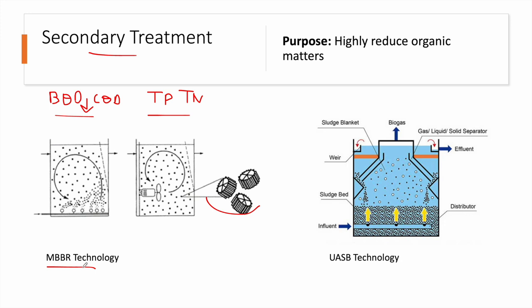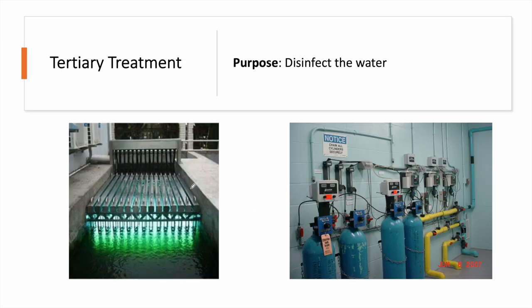For aerobic systems we can use MBBR technology, activated sludge, MBR, and others. When we say aerobic, it means injecting air using air blowers and air diffusers. We can also use anaerobic technologies where no air is injected — for example UASB technology — so in that case air blowers are not required.